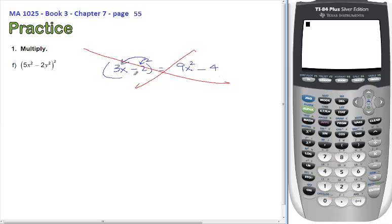You cannot square a binomial and get a binomial. You square a binomial, always a trinomial. Square a binomial, always a trinomial.